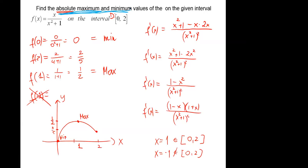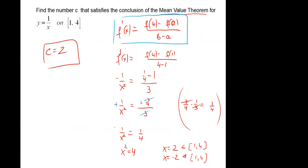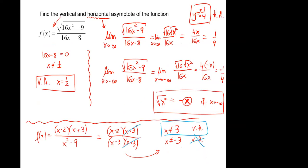Mean value theorem: the blue box is the concept. Derivative on the left-hand side equals average rate of change on the right-hand side. Combine them, solve for x, and make sure the x-value is in the given interval.